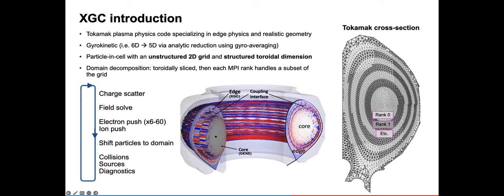XGC is a tokamak plasma physics code which specializes in edge physics and realistic geometry. It's a gyrokinetic code, which means we're taking the 6D plasma physics and reducing it to five dimensions using a technique called gyro averaging. It's a particle-in-cell code on an unstructured 2D grid in the poloidal cross section, which you can see on the right here. This unstructured grid is what really enables us to do that realistic geometry.